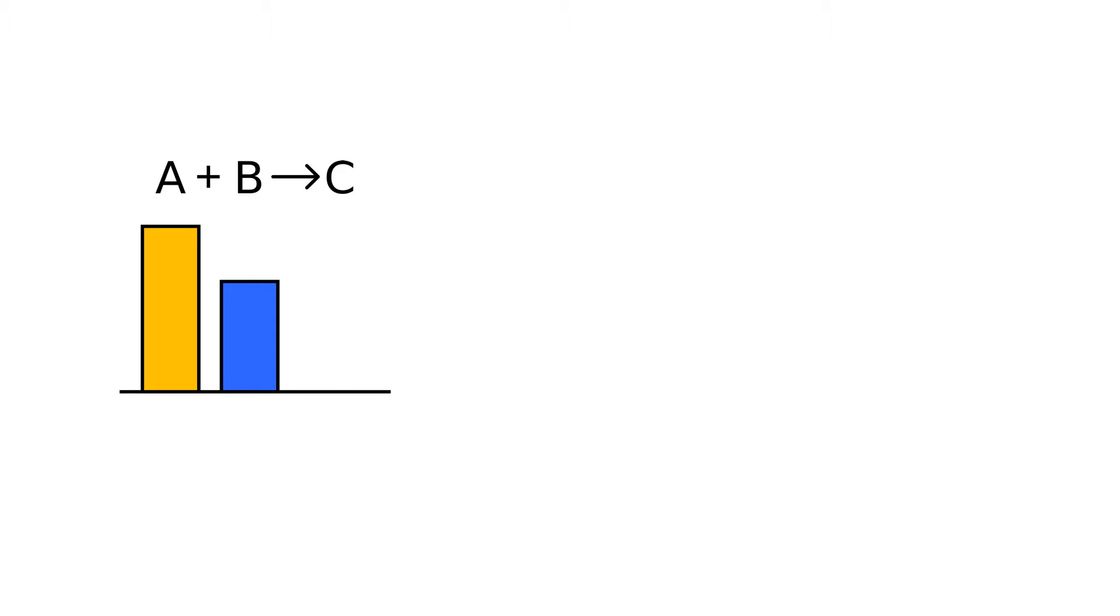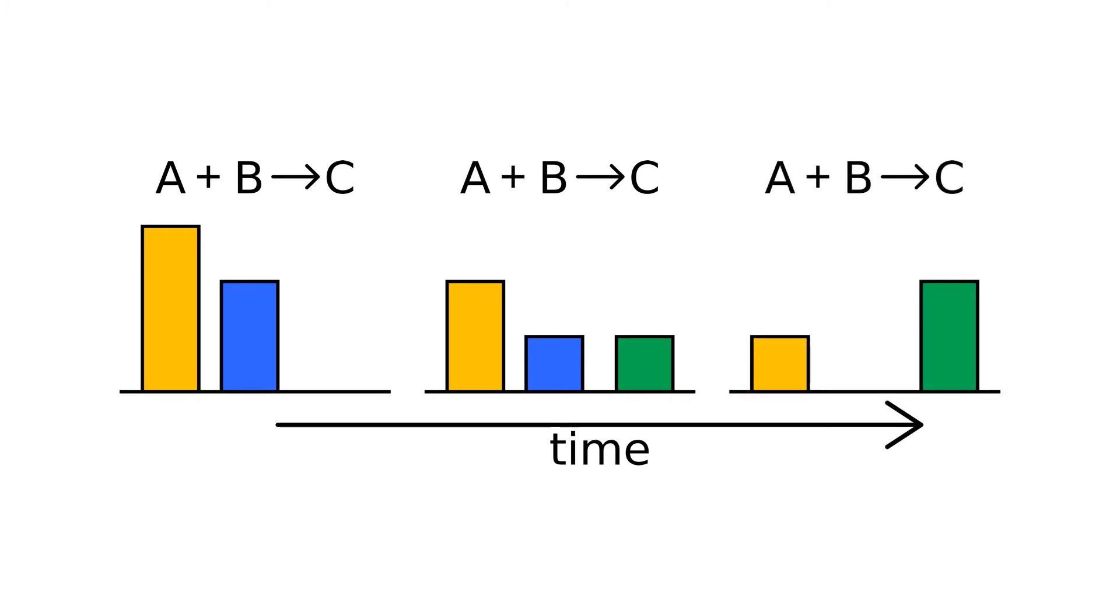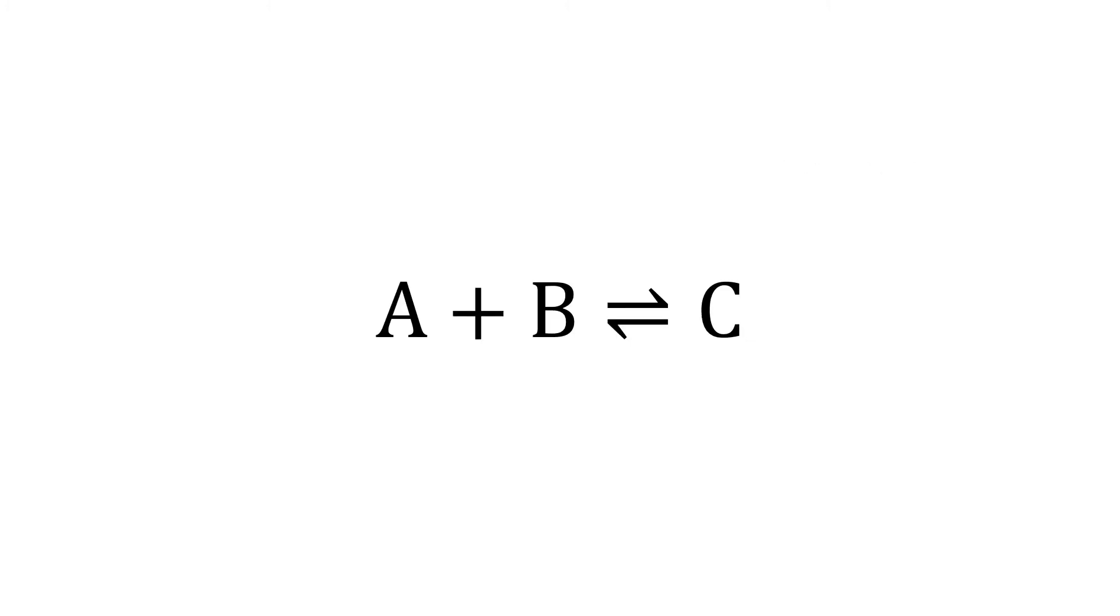In stoichiometry, limiting reagents indicated how much of a product would be formed, but these were for unidirectional or forward reactions where it was assumed that all the reactants make products, at which point the reaction is finished.